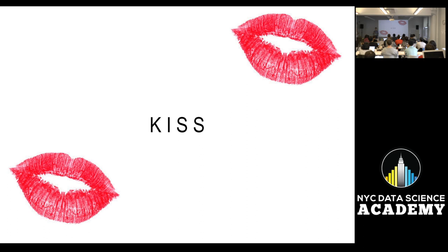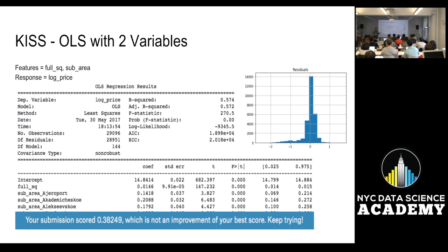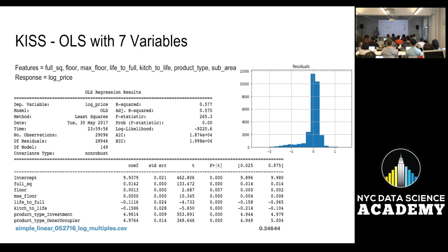So KISS, this is, keep it simple, stupid. So I wanted to look at the most simplest model we could think of. I did a two variable multilinear regression. Just using full square meters and the sub area. I don't know if that still counts as two, but since I dumbified it. Anyway, the R square was 0.57 and whenever I submitted to Kaggle, I got a 0.38. I think with just two variables, that's not bad. Then we added some more variables. R square didn't improve much, but our Kaggle score did. We ended up getting a 0.346 off of 57 variables. And then I'm gonna pass it over to Grant the Plumber.